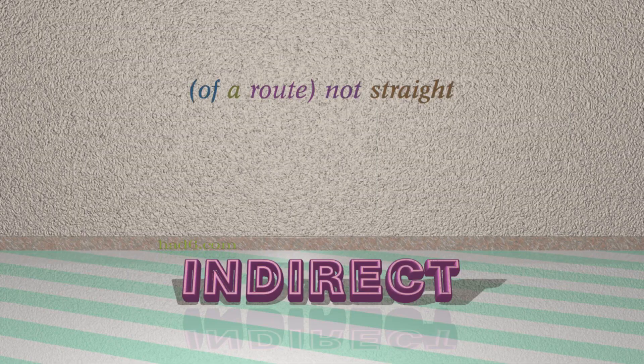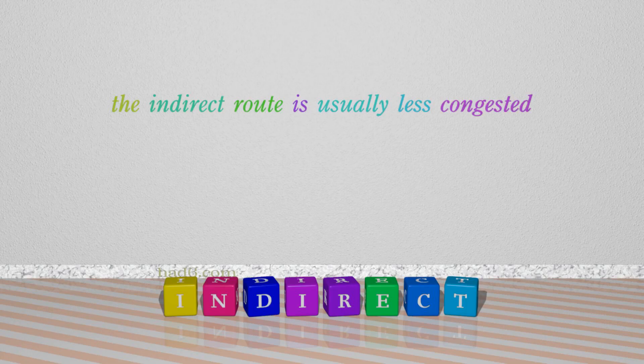Number 6: Indirect. Which means of a route, not straight. For example: The indirect route is usually less congested.